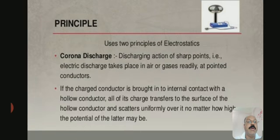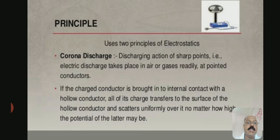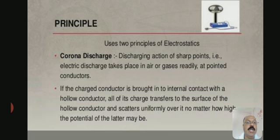What is the principle? It uses two principles of electrostatics. One is corona discharge — the discharging action of sharp points — meaning electric discharge takes place in air or gases readily at pointed conductors. Another principle is that if a charged conductor is brought into internal contact with a hollow conductor, all of its charge transfers to the surface of the hollow conductor and scatters uniformly over it, no matter how high the potential of the latter may be.